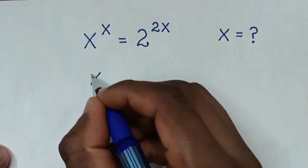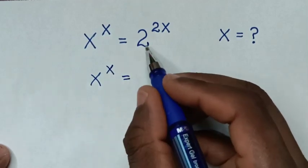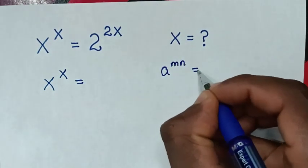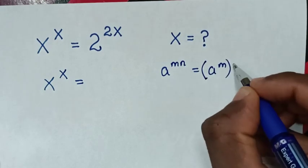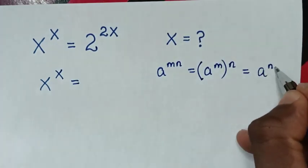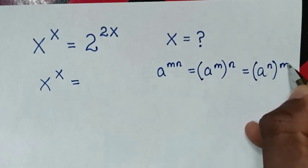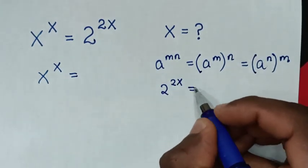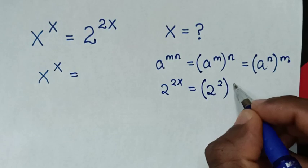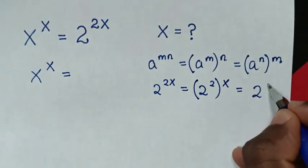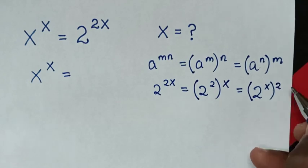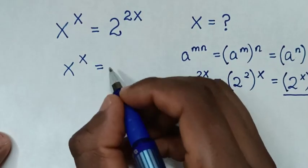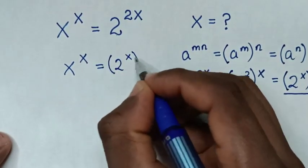From our equation, x power of x is equal to 2 power of 2x. We will apply the exponential rule that a power of mn is equal to a power of m bracket power of n, which is equal to a power of n bracket power of m. So from 2 power of 2x, it will be equal to 2 power of x, then bracket power of 2. We substitute this 2 power of x bracket power of 2 into the equation, so it will be 2 power of x bracket power of 2.